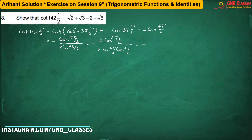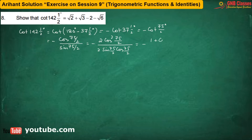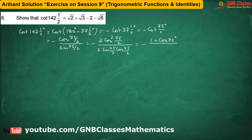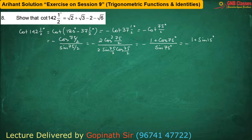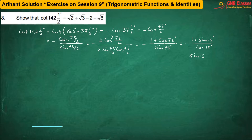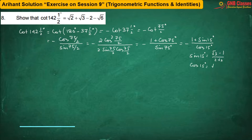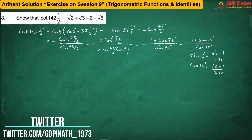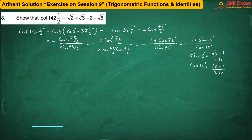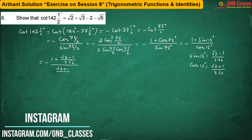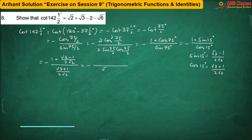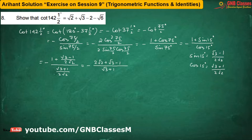2cos²θ can be written as 1 + cos2θ. 2sinθ·cosθ can be written as sin2θ. We know the value of sin15° = (√3 − 1)/(2√2) and cos15° = (√3 + 1)/(2√2). Putting those values, so we are having — now I am rationalizing.